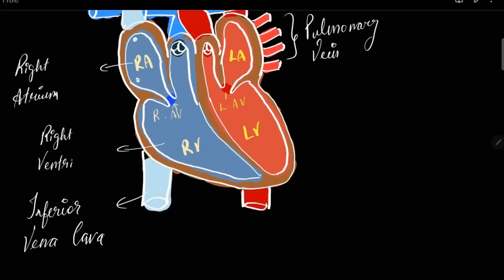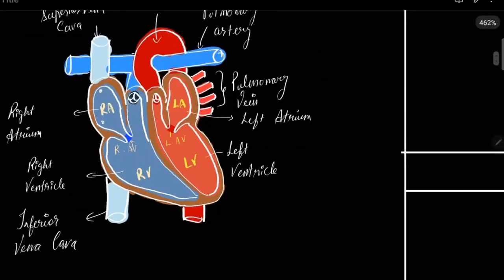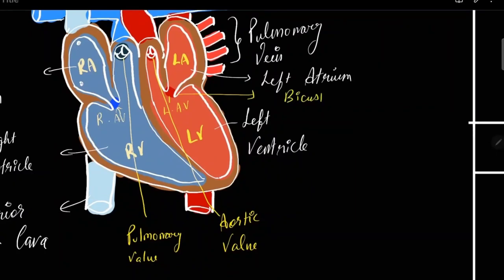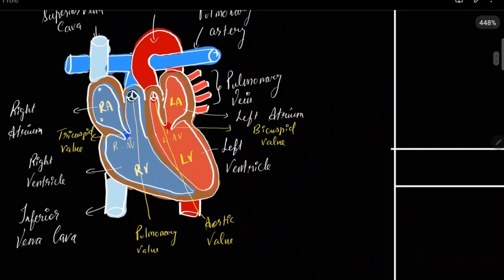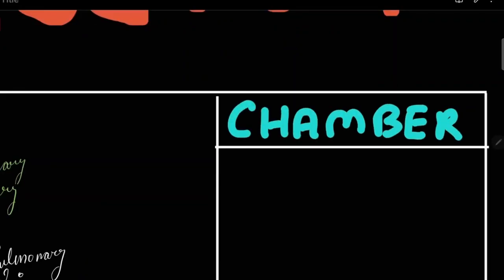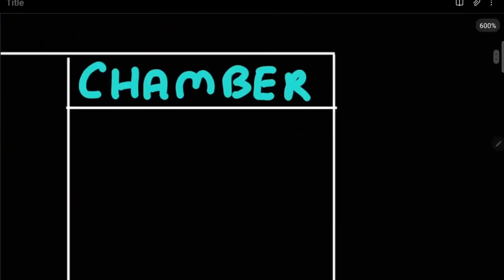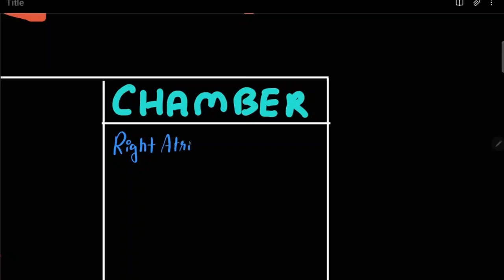There are four chambers: right atrium, right ventricle, left atrium, and left ventricle. Between the right ventricle and pulmonary artery you have your pulmonary valve, and between the left ventricle and aorta you have your aortic valve.